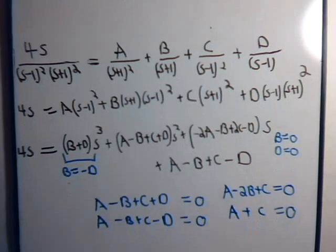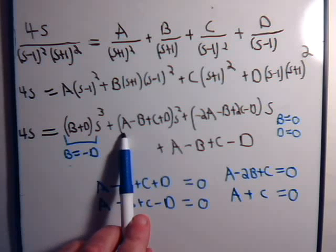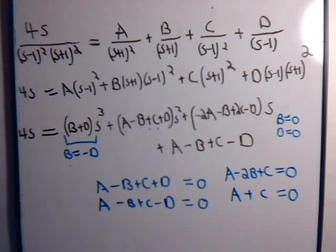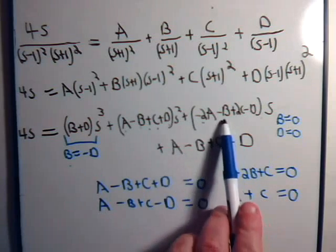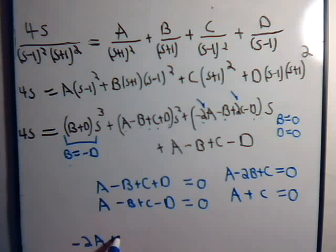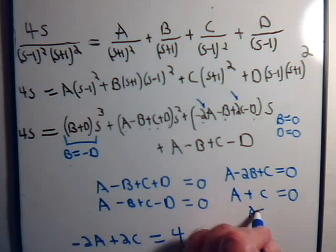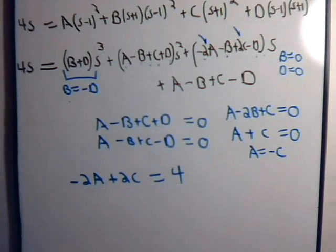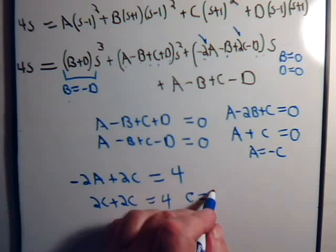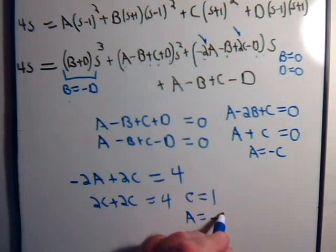So B equals zero and D equals zero. From the s term equation, with B and D equal to zero, we have minus 2A plus 2C equals 4. From A plus C equals zero, we get A equals minus C. Substituting gives 2C plus 2C equals 4, so C equals 1 and therefore A equals minus 1.